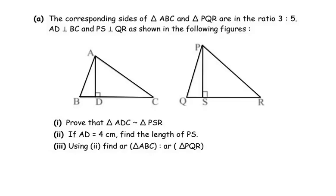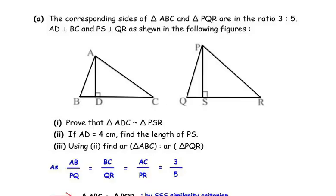To solve the first question, let us write down the given data first. It is given that the corresponding sides of triangles ABC and PQR are in the ratio 3 is to 5. The side AB from triangle ABC corresponds to the side PQ from triangle PQR, so we have written AB over PQ here is equal to the side BC from triangle ABC which corresponds to the side QR from triangle PQR.